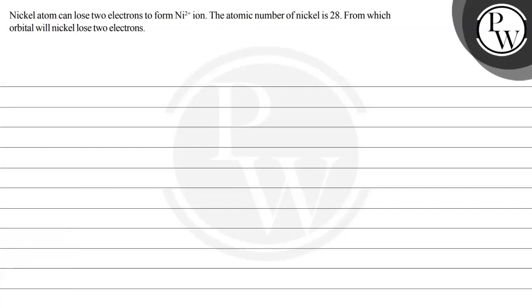Hello Bacho, let's read this question. The question says nickel atom can lose two electrons to form Ni²⁺ ion. The atomic number of nickel is 28. From which orbital will nickel lose two electrons?